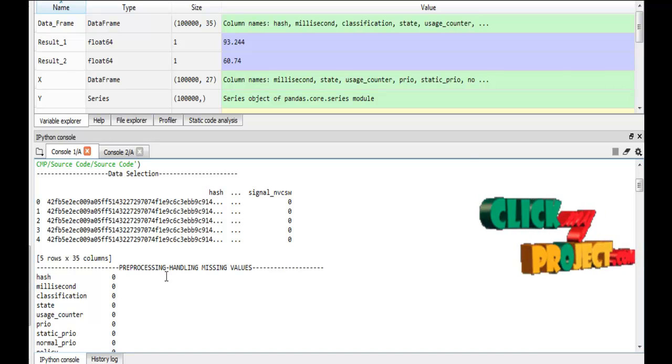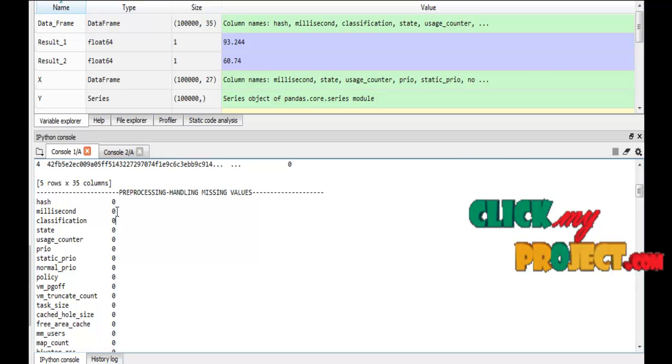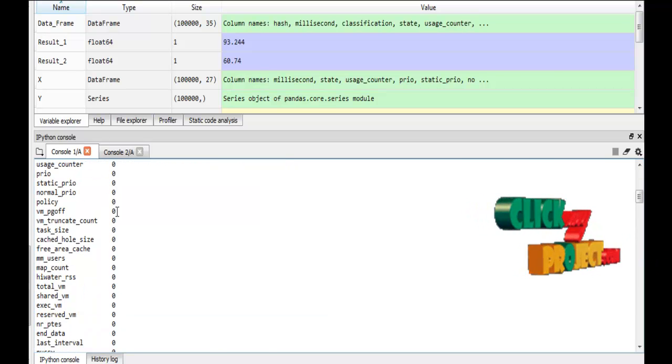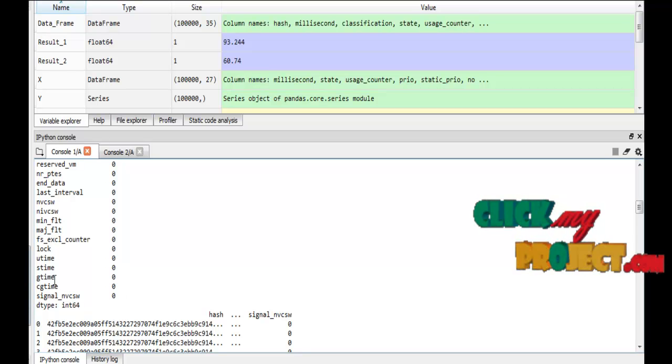Next is the preprocessing step. In this step, we handle the missing values. Already, our data cells have no missing values. Here, zero means there is no missing values for each column.